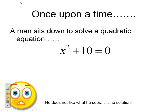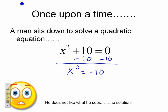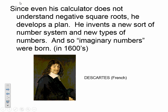Once upon a time, a mathematician sat down to solve a quadratic equation. He subtracts 10 from both sides, gets x squared equals negative 10, and then takes the square root of both sides. He types the square root of negative 10 into his calculator and — what happens? It comes out as an error. He is not willing to accept that there is going to be no solution to this problem. Since his calculator doesn't understand negative square roots, he develops a plan and invents a new sort of number system — new types of numbers. And so, imaginary numbers were born.